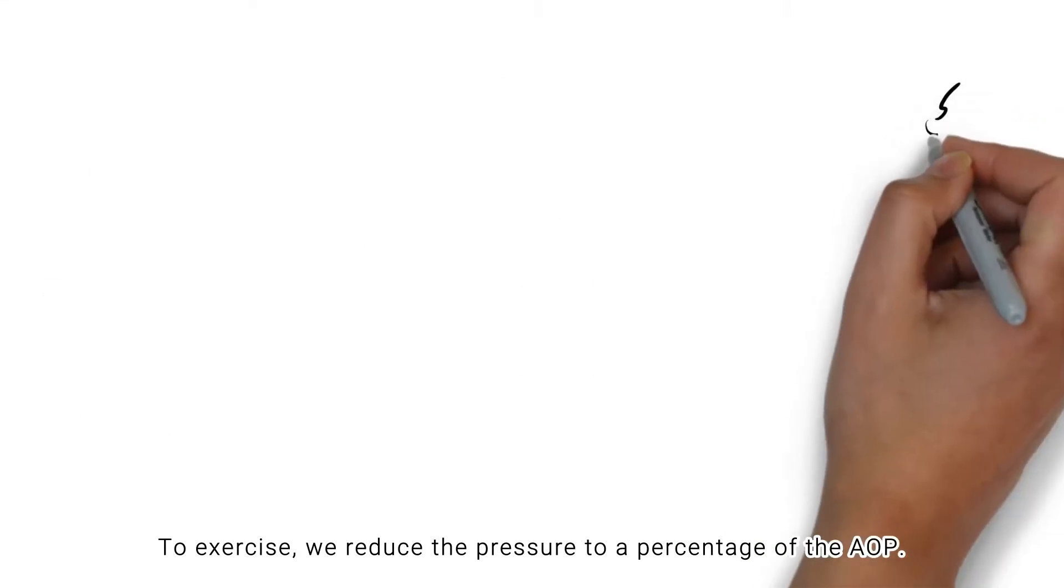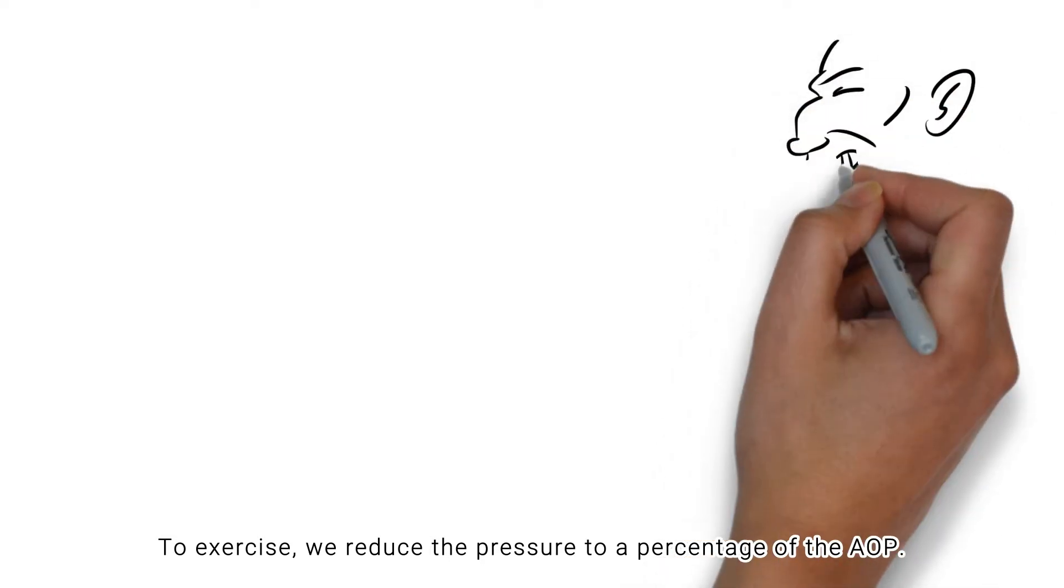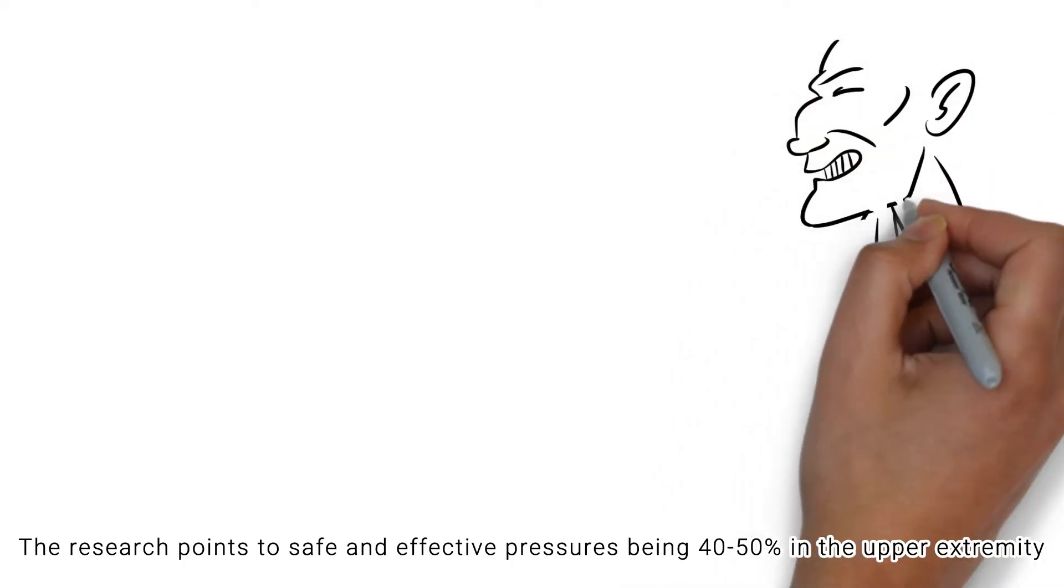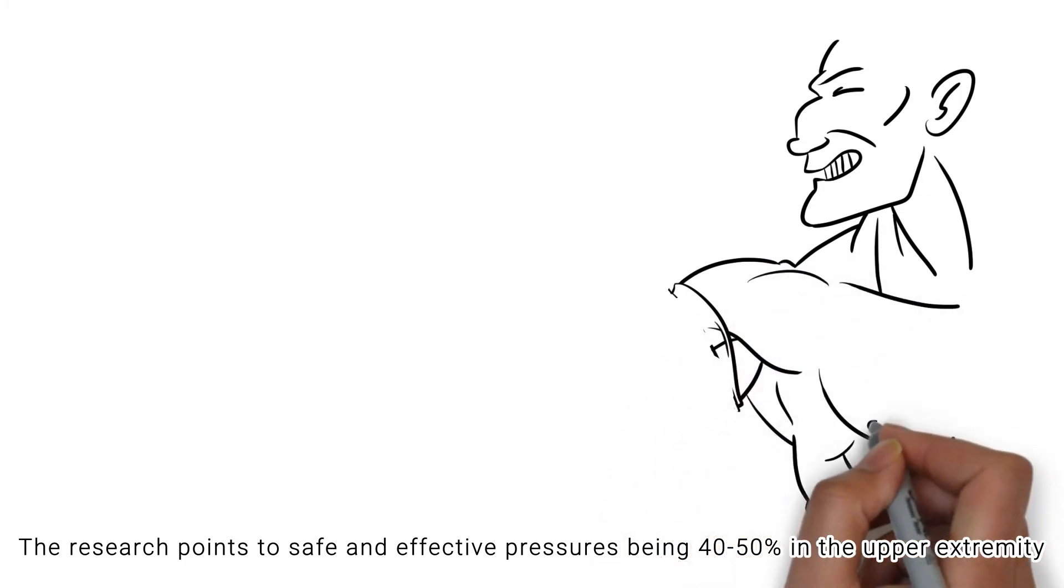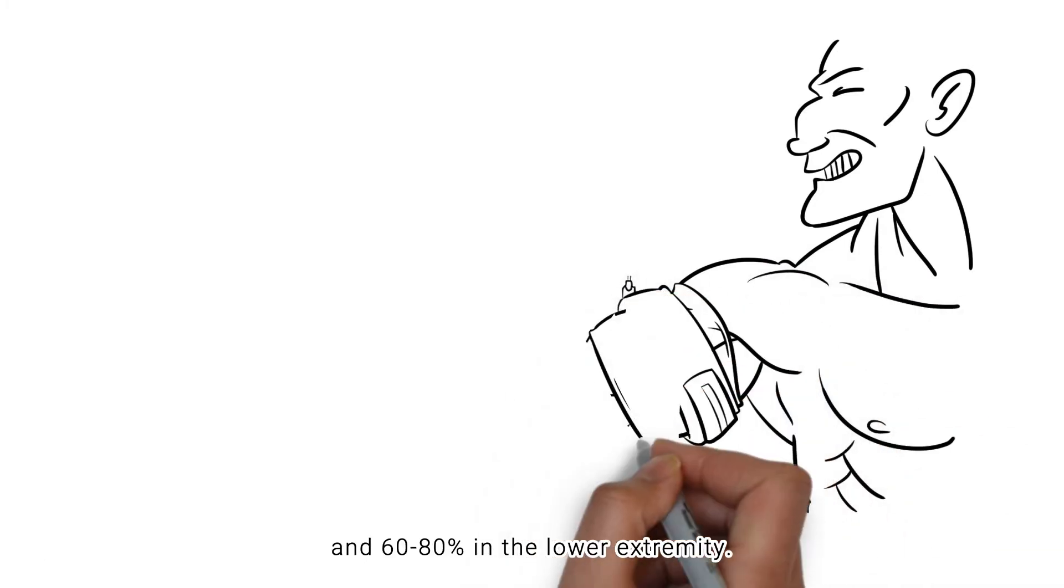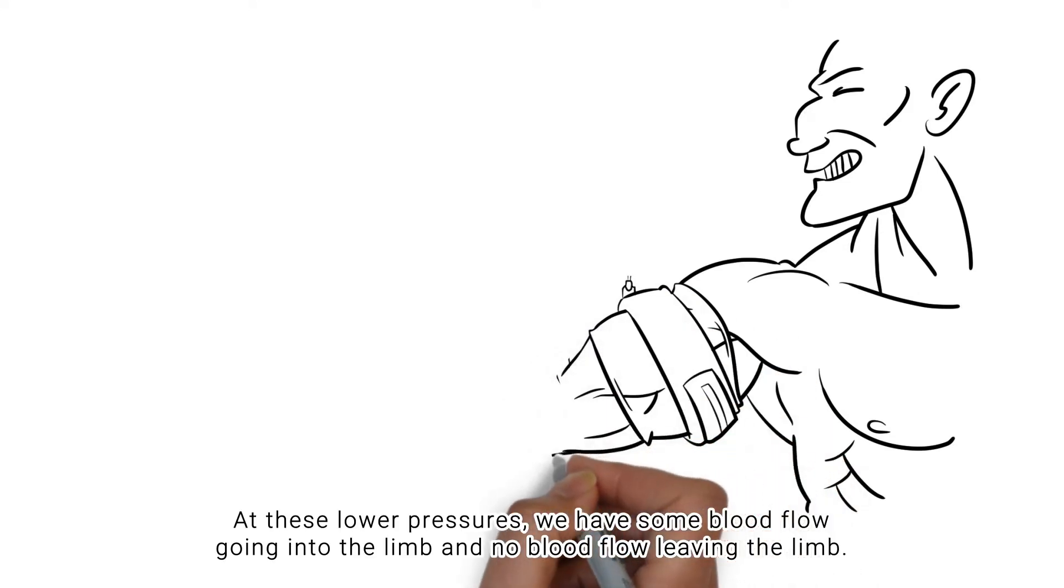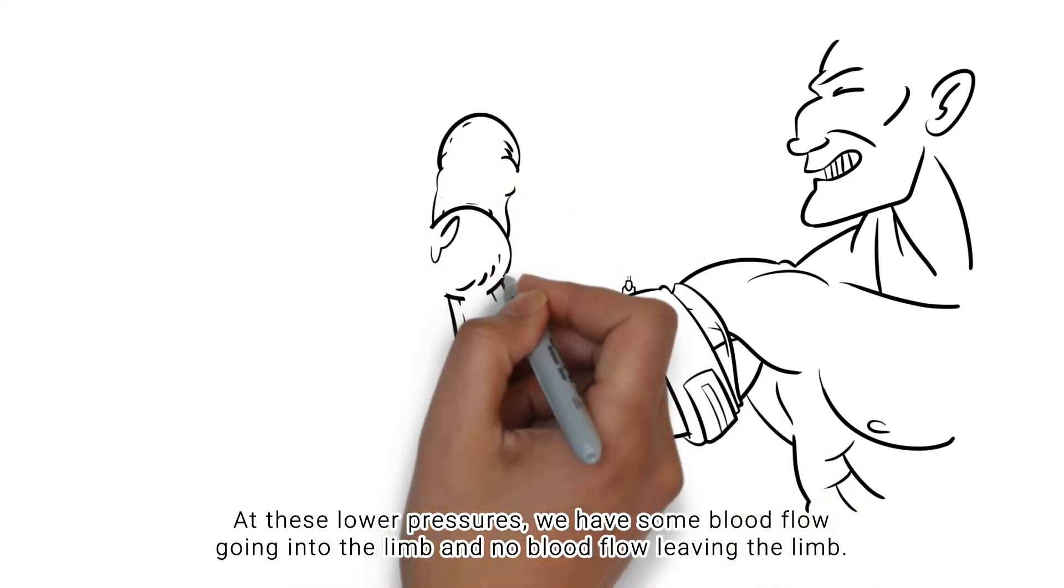To exercise, we reduce the pressure to a percentage of the AOP. The research points to safe and effective pressures being 40-50% in the upper extremity and 60-80% in the lower extremity. At these lower pressures, we have some blood flow going into the limb and no blood flow leaving the limb.